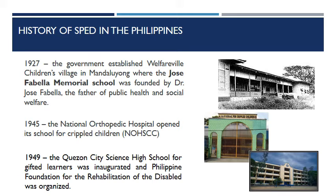In 1945, the National Orthopedic Hospital opened its School for Crippled Children, or NOHSCC — a national special school providing formal and informal education to orthopedically handicapped children with exceptional needs. It was established in 1947 when the NOH director JV de los Santos felt the need for special education teachers to conduct bedside teaching to elementary school patients requiring months or years of hospital confinement. These children received instruction first from volunteers, then from teachers requested from the Bureau of Public Schools.